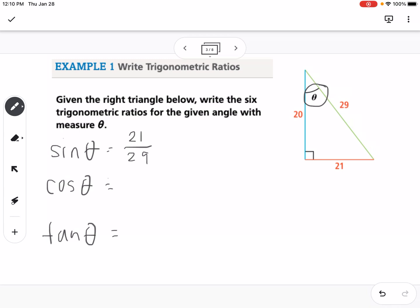Then cosine is going to be adjacent over hypotenuse, so that would be 20 over 29. And then tangent would be opposite over adjacent, so it would be 21 over 20. Then we're going to take those and flip them to find our reciprocal functions.